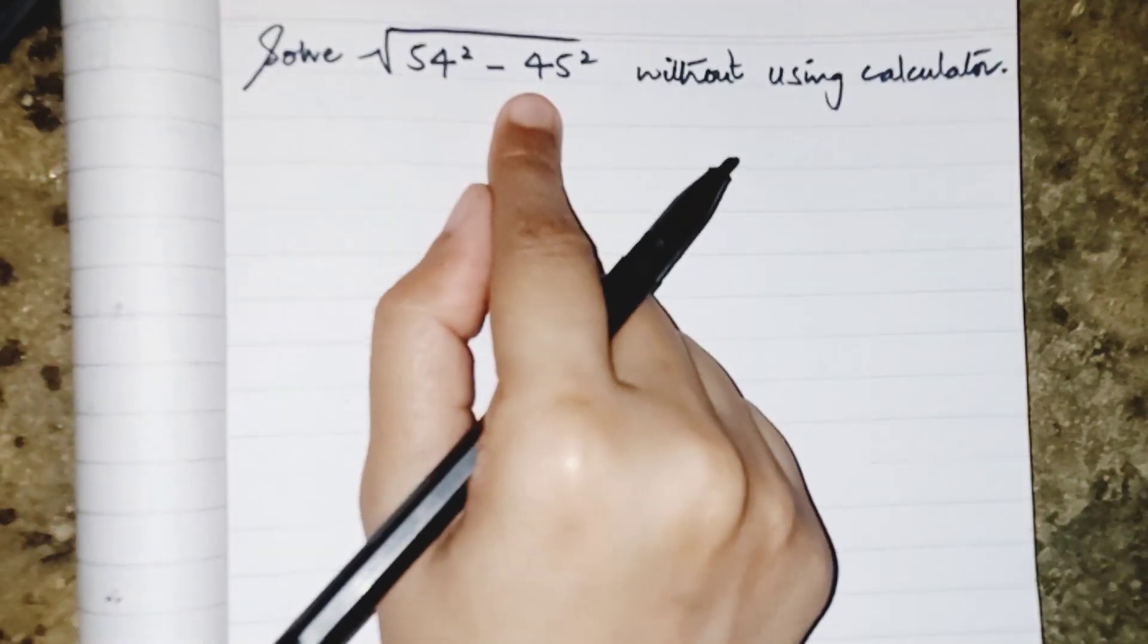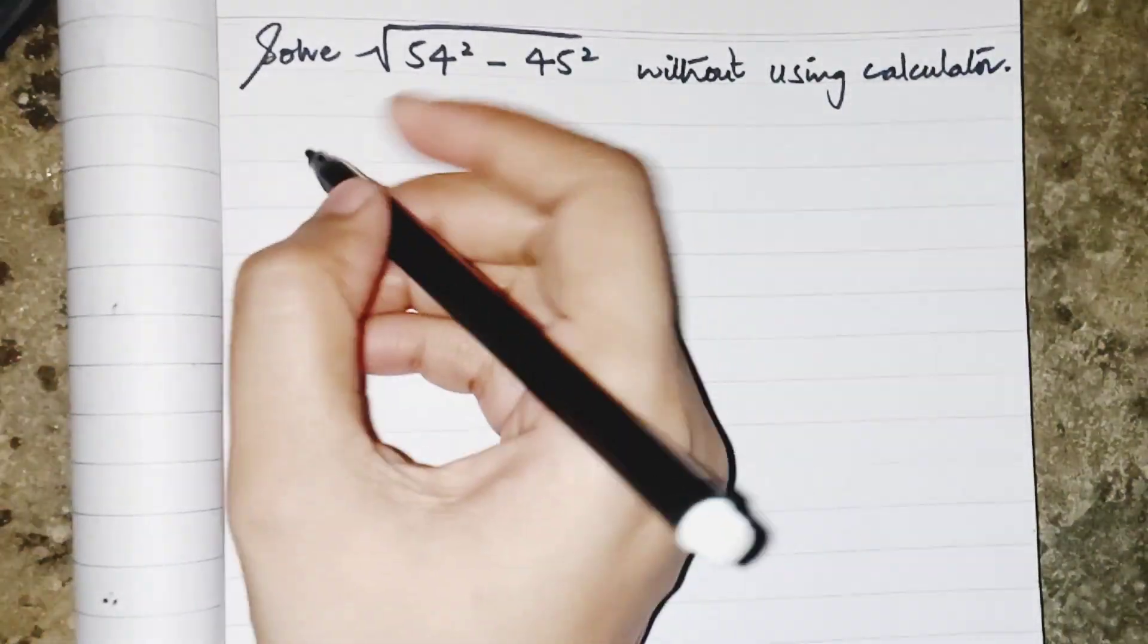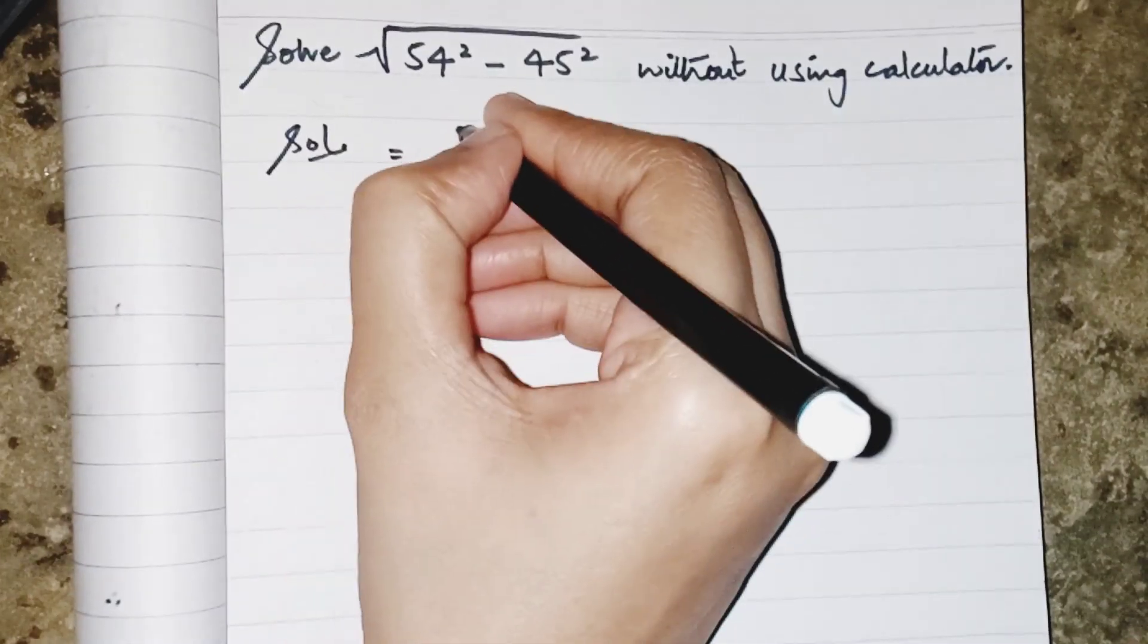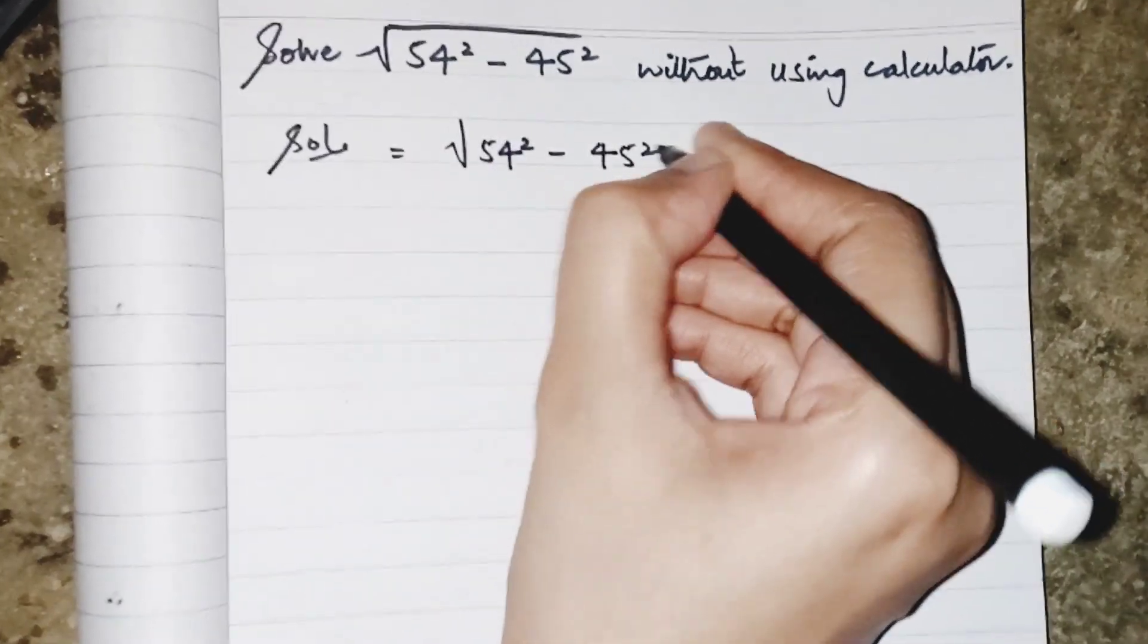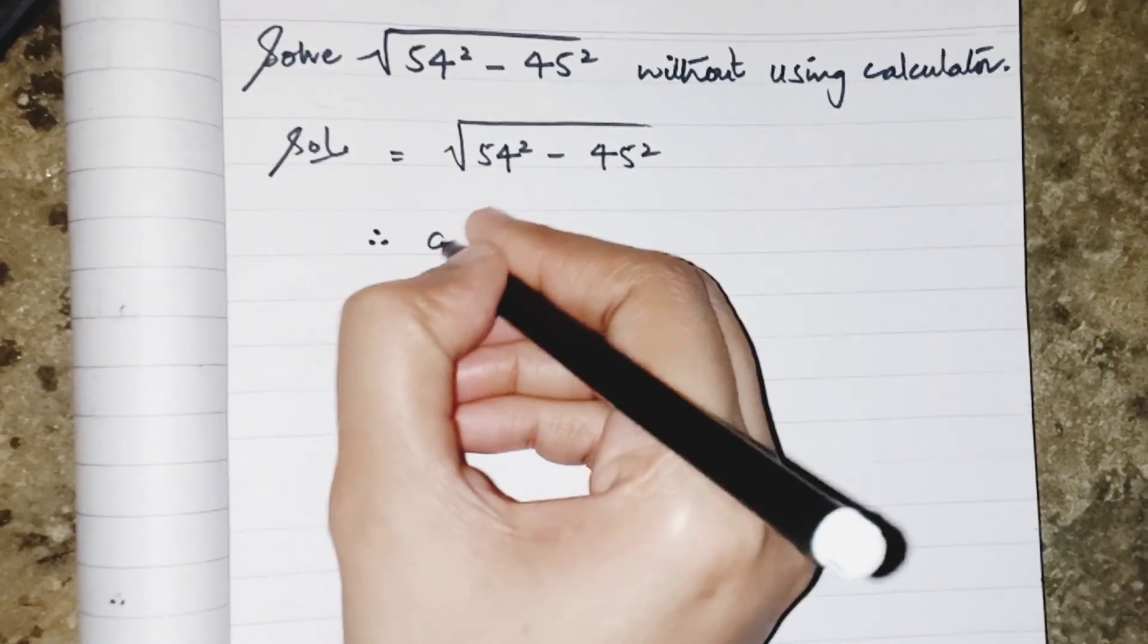Everyone, I have to solve this question without using a calculator. The question is very simple, so let's start solving this one. I have under root 54 square minus 45 square, so simply I have to apply a formula of a